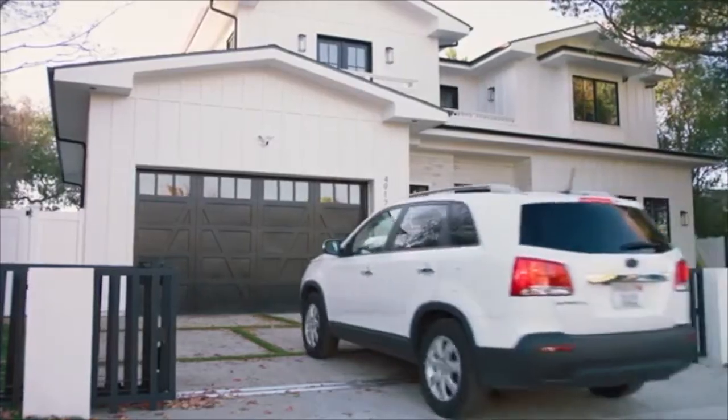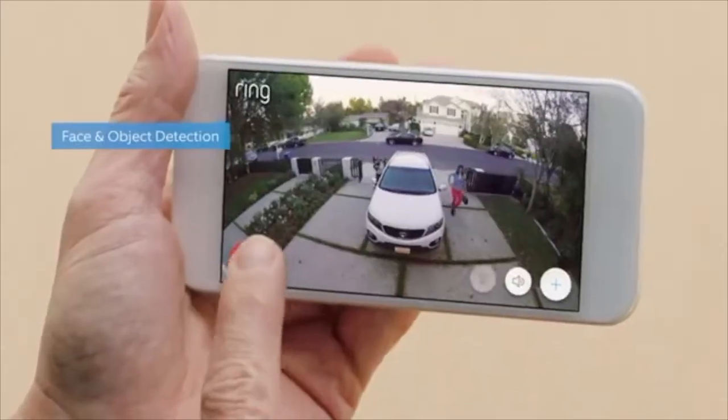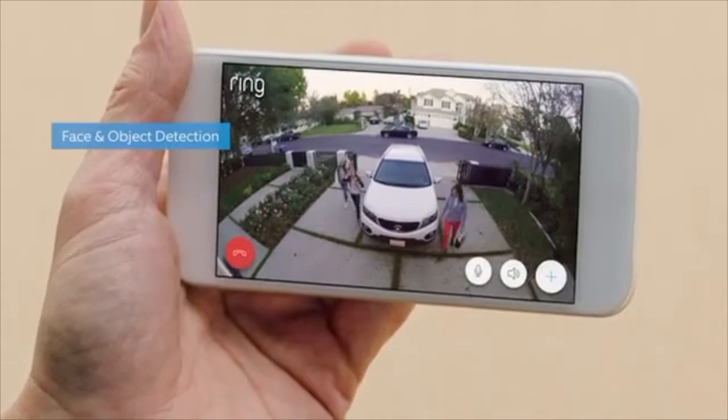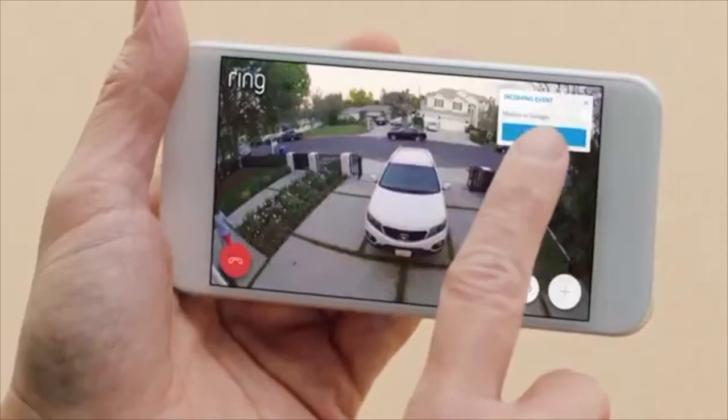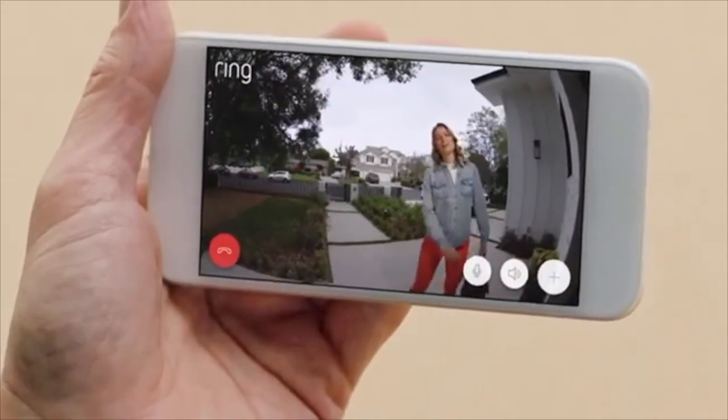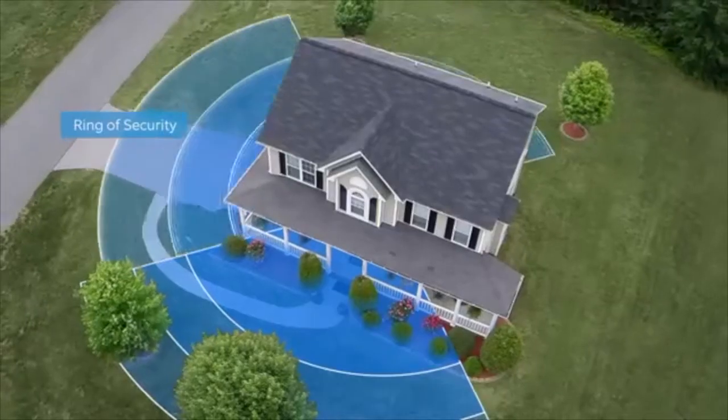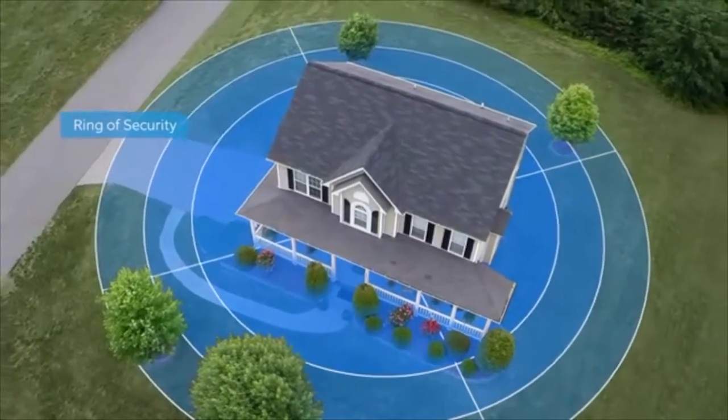Floodlight Cam is smart enough to detect faces and objects and works with your other Ring cameras to create a ring of security around your home.